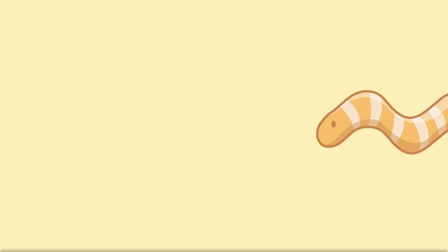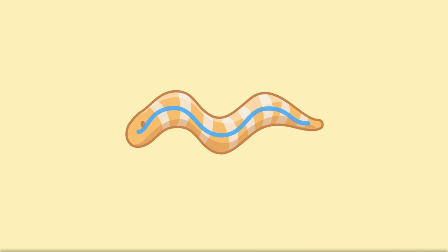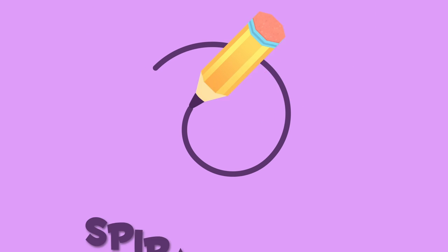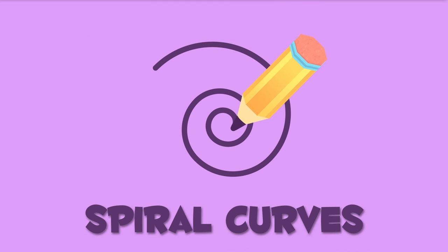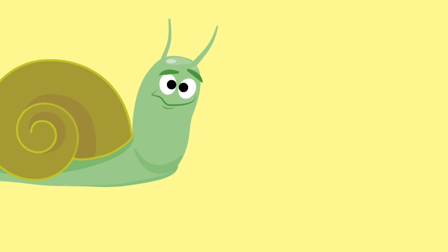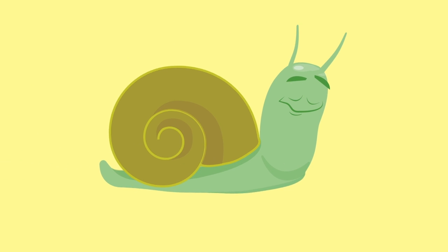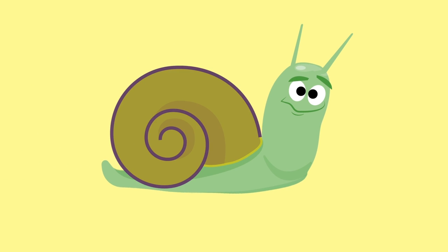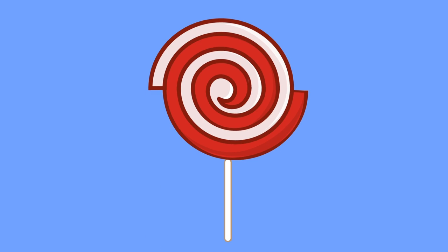Wavy curves are in the same group as curved lines — like this curvy path or this worm. Spiral curves are in the same group as open curves — like this snail or this lollipop. So yummy!